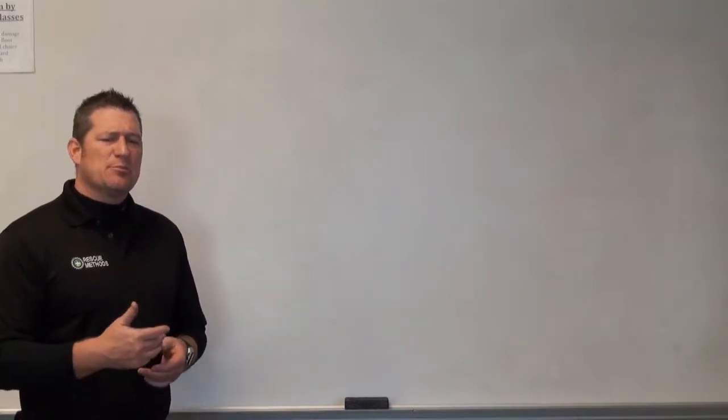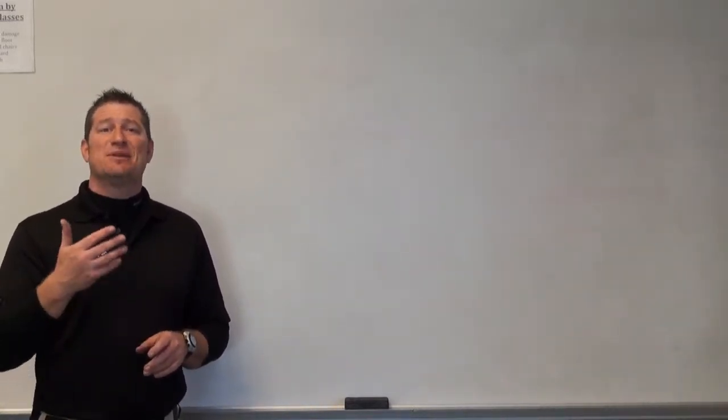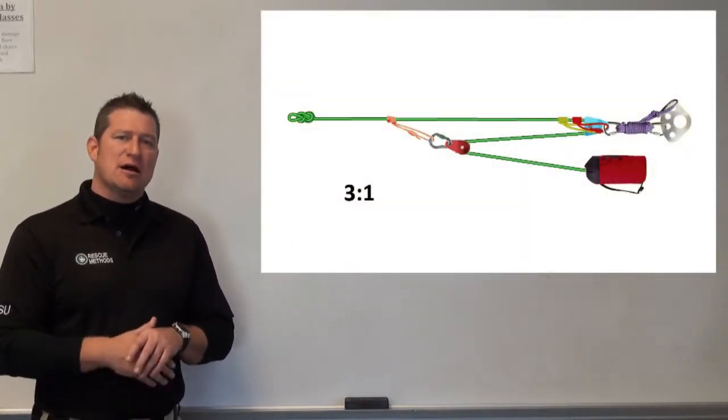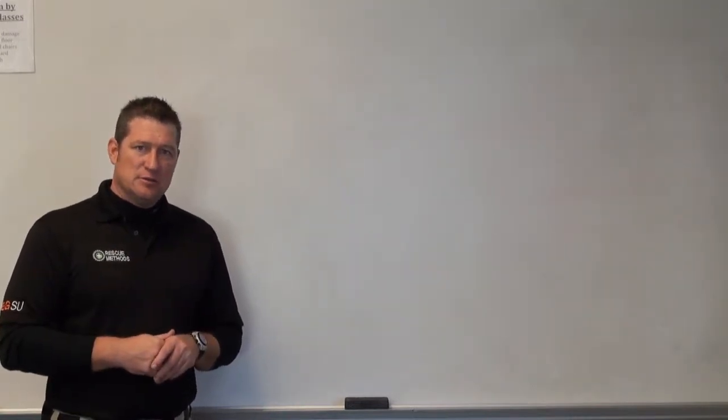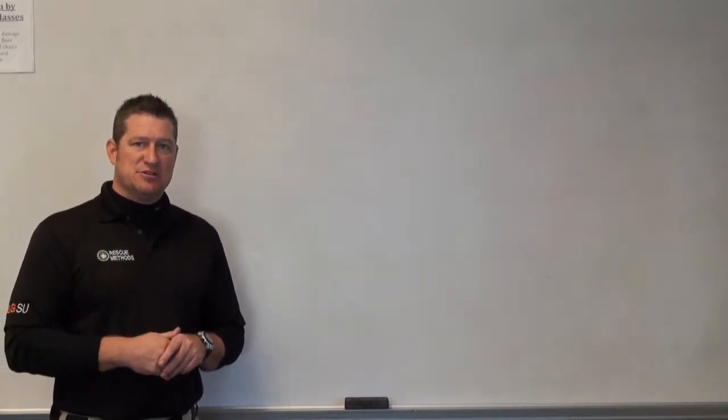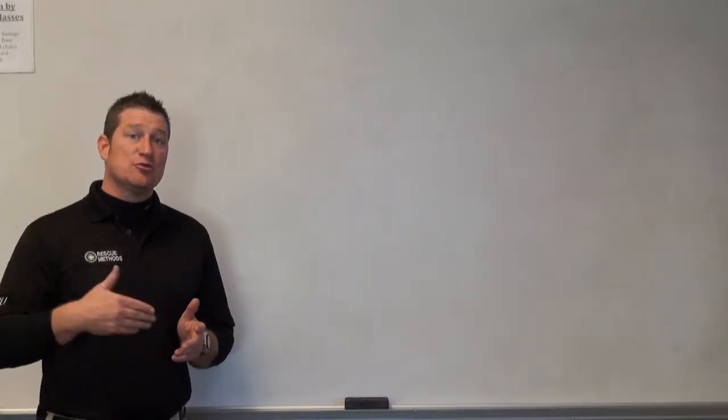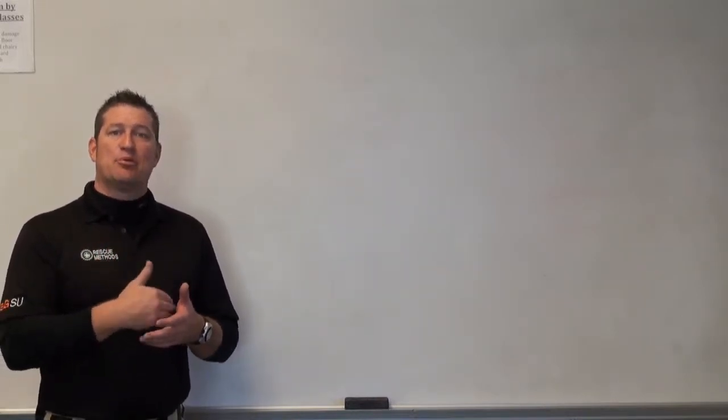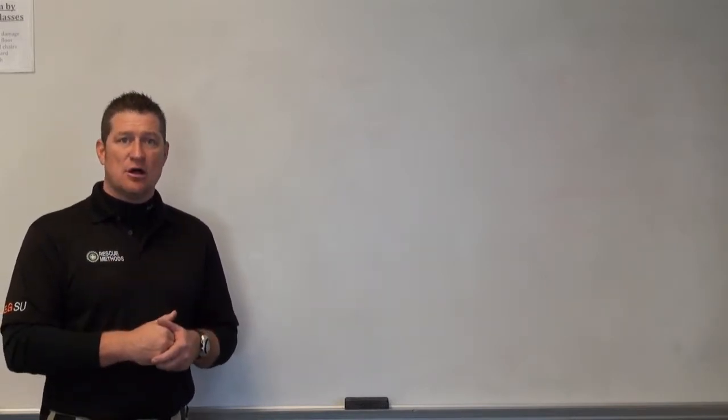So we're going to use a simplistic 3-to-1 mechanical advantage or Z-rig component to start analyzing this theory. In that 3-to-1 application, at the pull, I'm going to always start with one unit of tension. That one unit of tension is going to travel through that rope system until it either contacts a prussic that is coming out of a moving pulley or until it contacts the load.